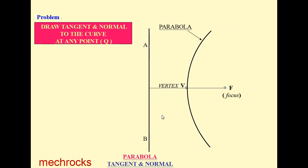First we take the parabola. This is the parabola. This AB is called the directrix. This horizontal line is called the axis line, and this point is called the focus F. The intersection of the parabola with the axis line is called the vertex V.